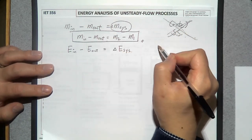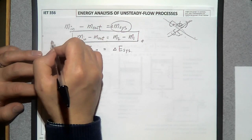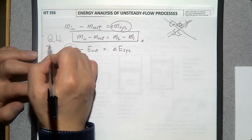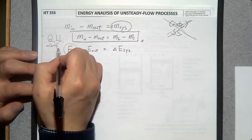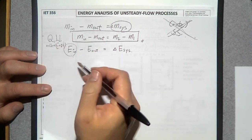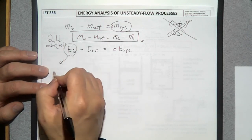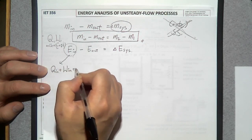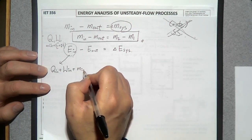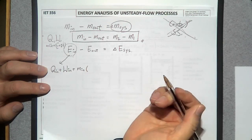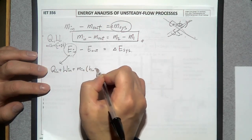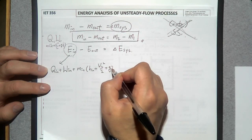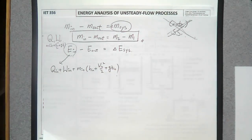We can consider three different energy transfers: heat transfer Q, energy transfer by work W, and mass transfer — which carries mass times enthalpy H, velocity squared over 2 (kinetic energy), plus gravity times elevation Z (potential energy). Energy transfer into the system can be heat transfer Q, work W, or mass entering the system carrying enthalpy H, kinetic energy V²/2, plus potential energy g·Z.